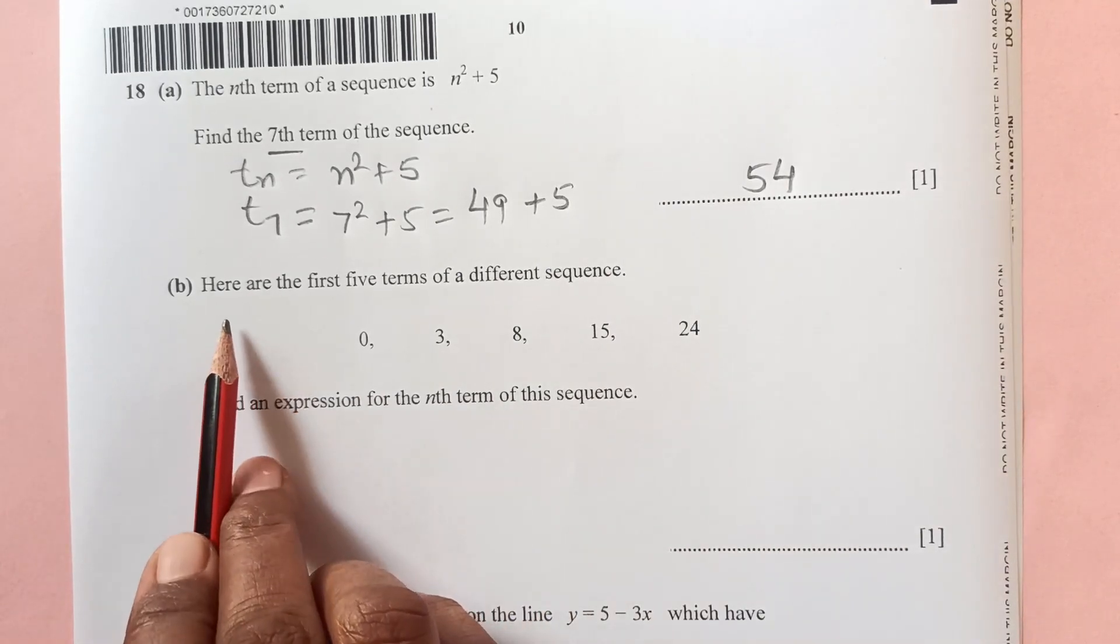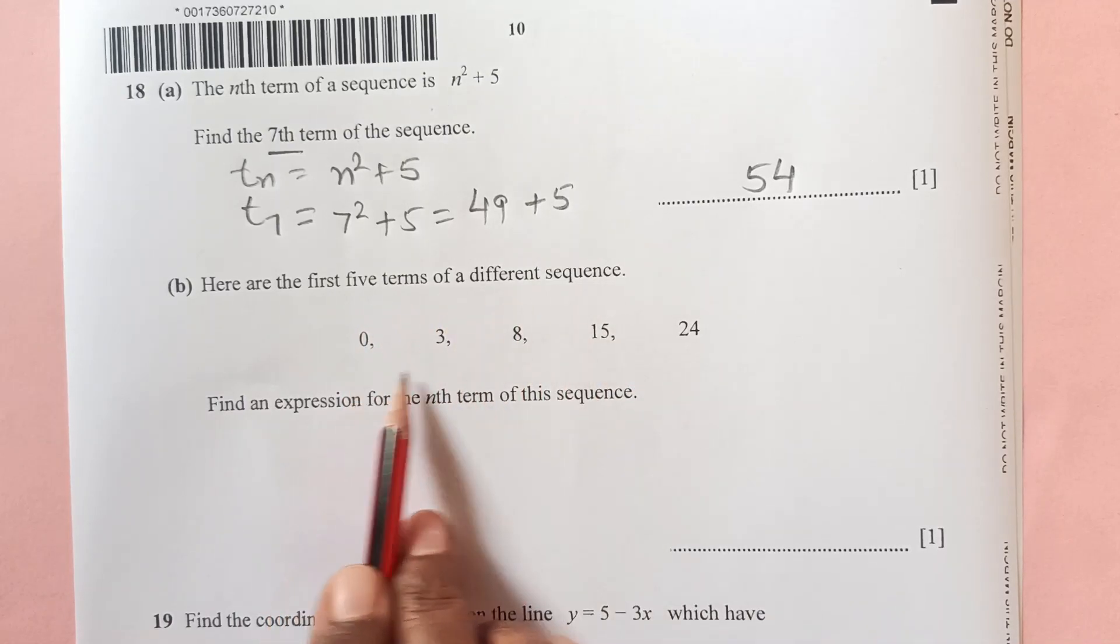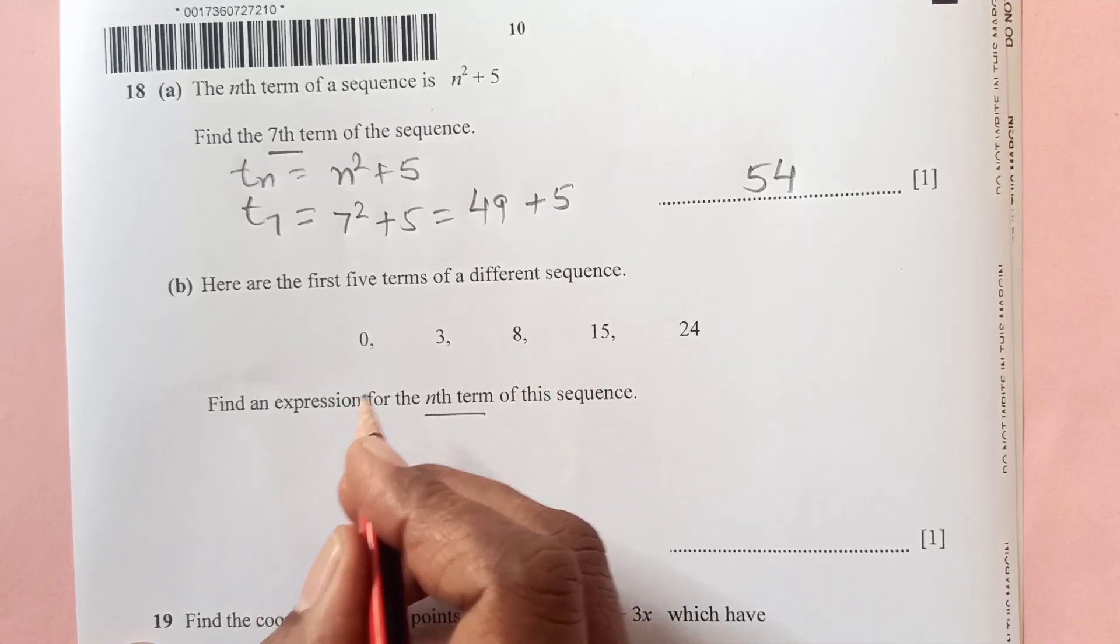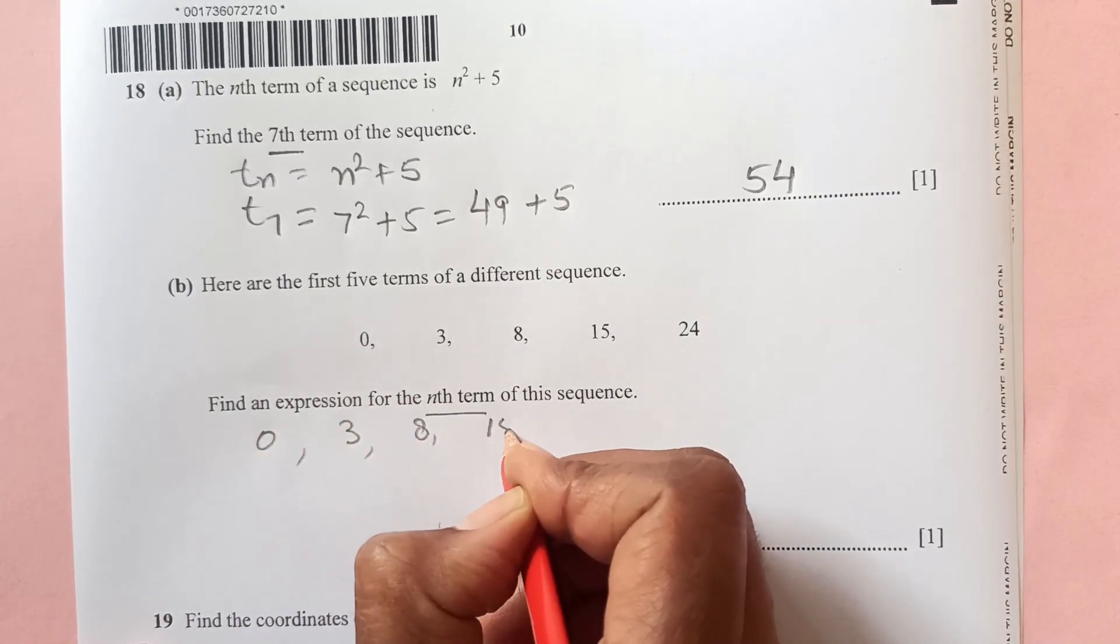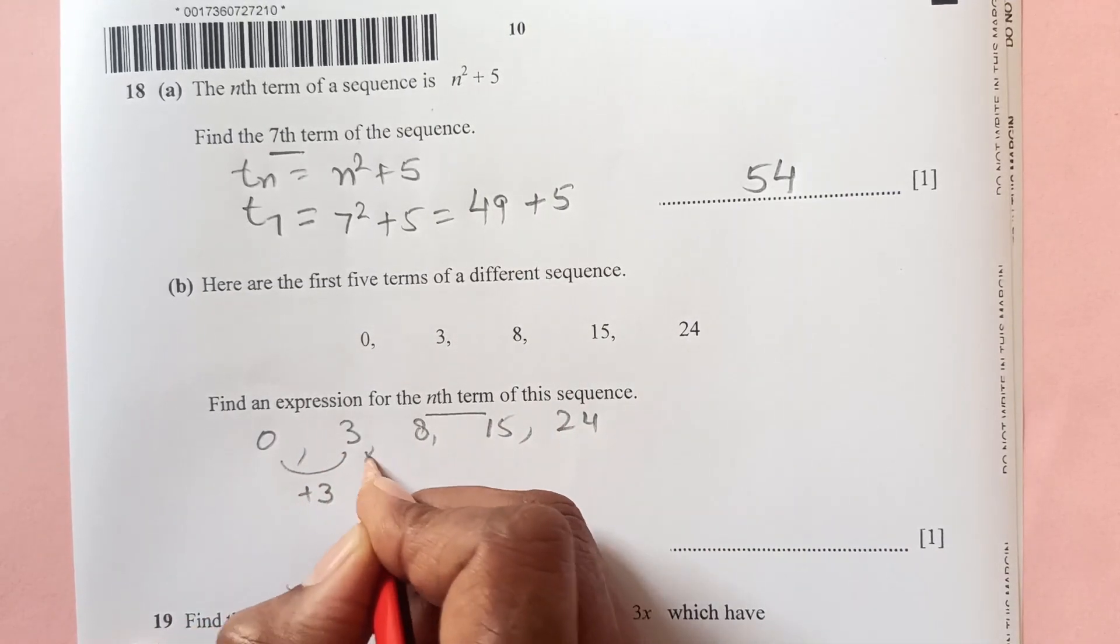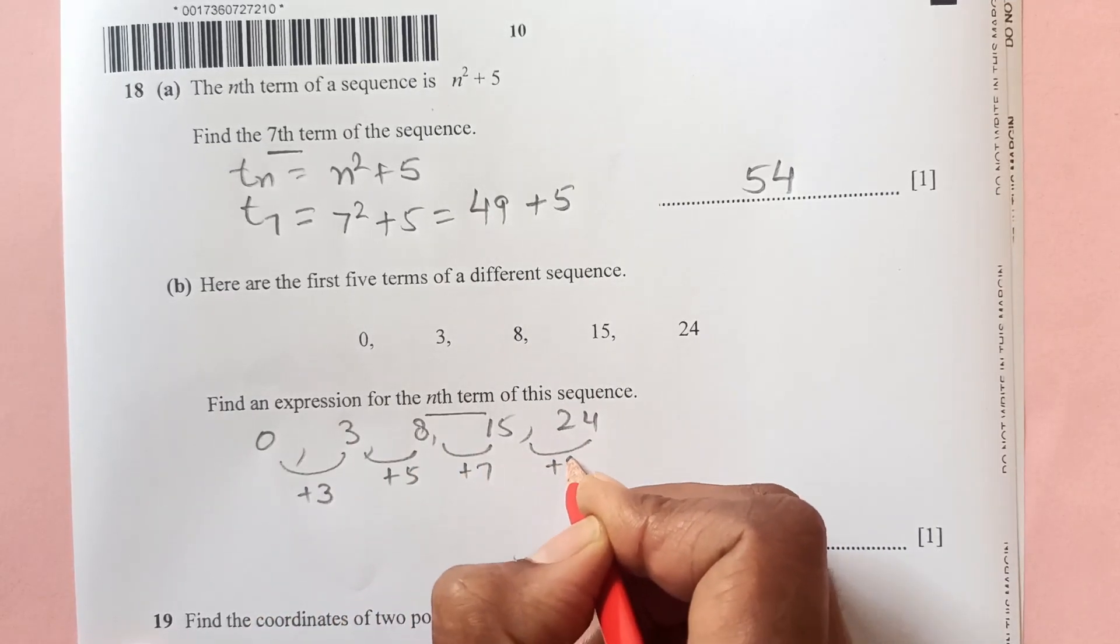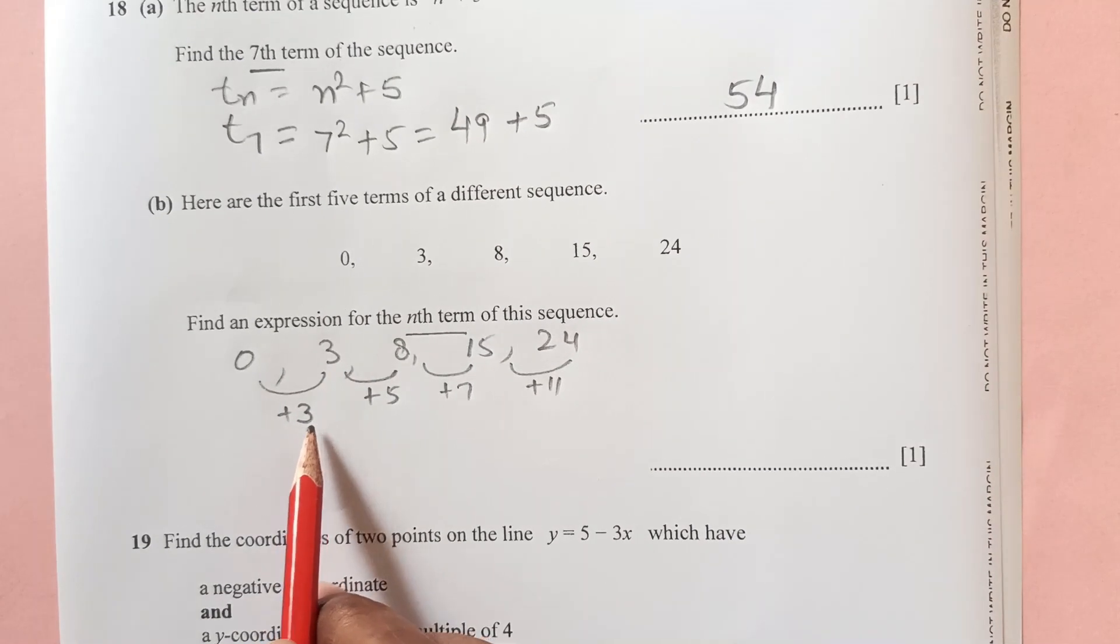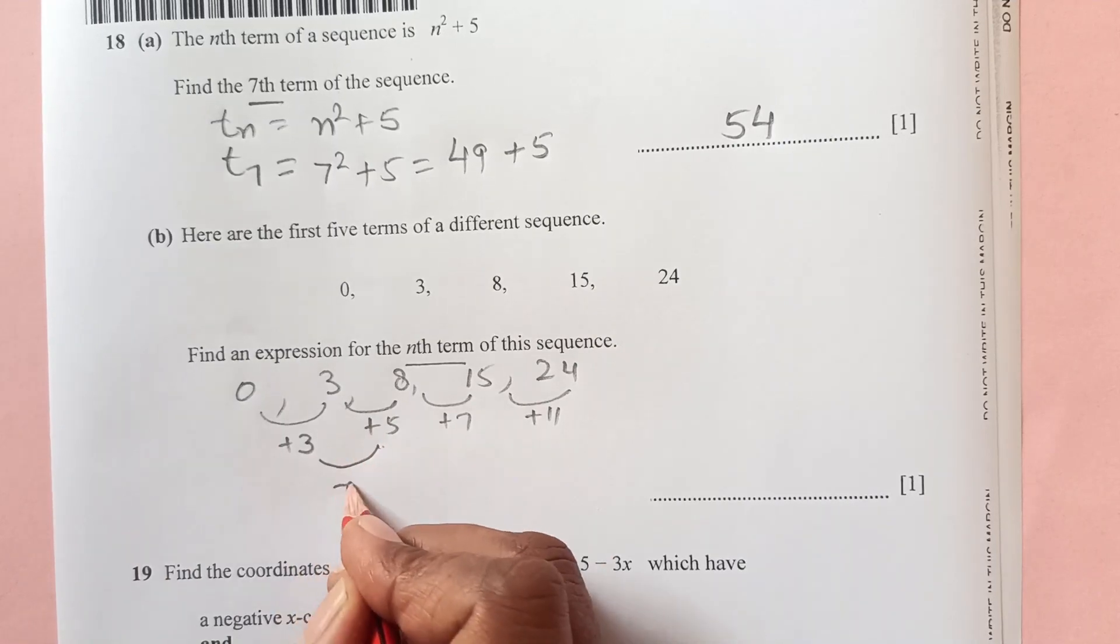But part b, here are the first five terms of a different sequence. Find an expression for the nth term. So this is a bit tricky: 0, 3, 8, 15, 24. The difference here is when you add 3, here you add 5, here you add 7, you add 11, right, to get the next term. But you see the common difference is not the same here. So then again, you go to the next step.